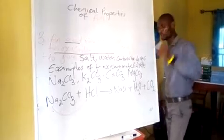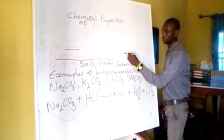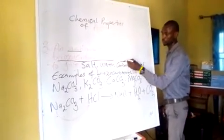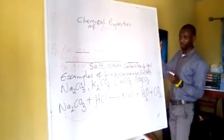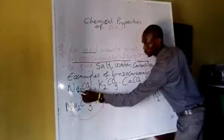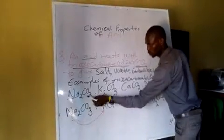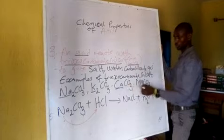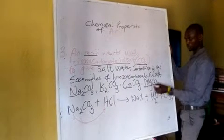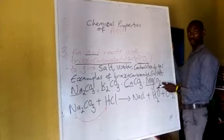When we say trioxocarbonate salt, we mean salt that has CO3. Examples of trioxocarbonate salts include sodium trioxocarbonate, potassium trioxocarbonate, calcium trioxocarbonate, and magnesium trioxocarbonate.